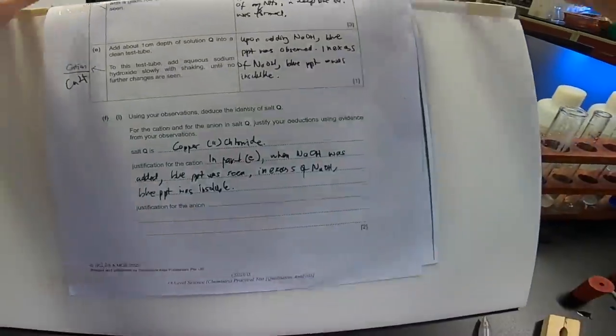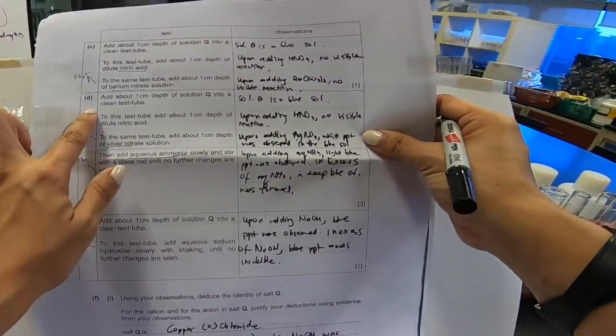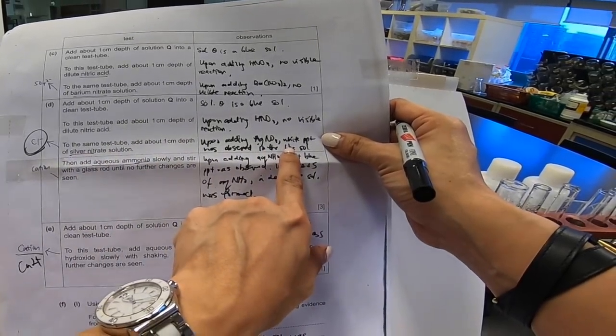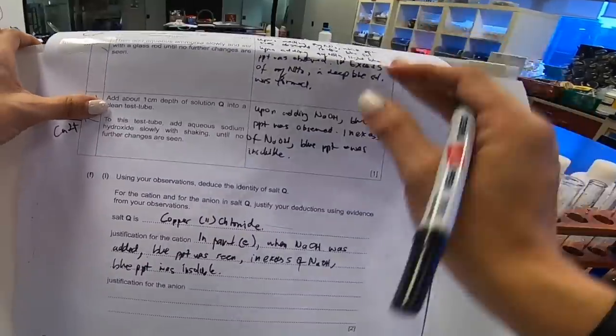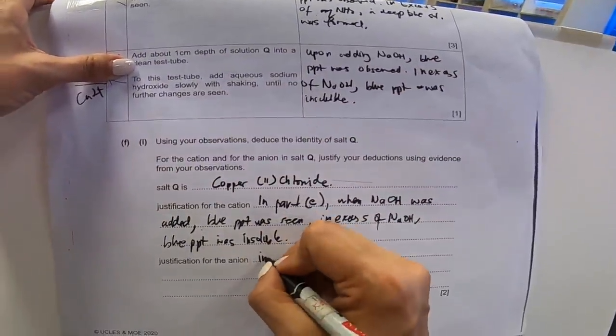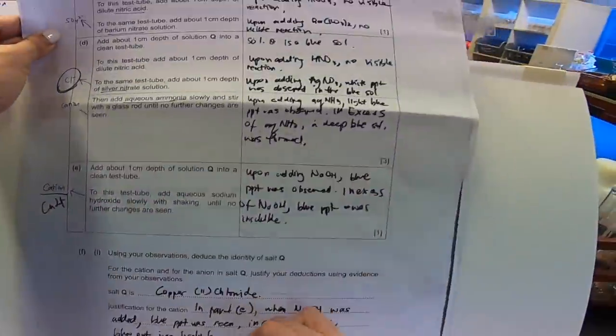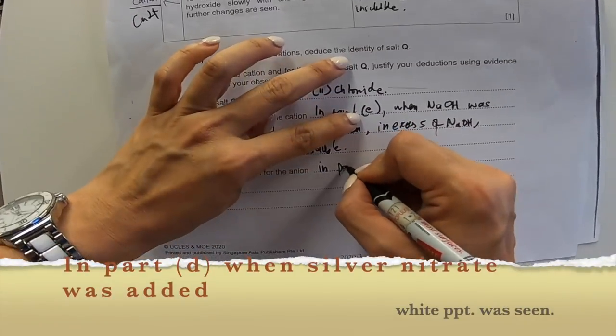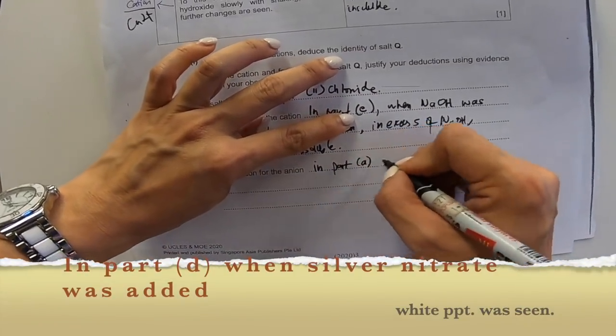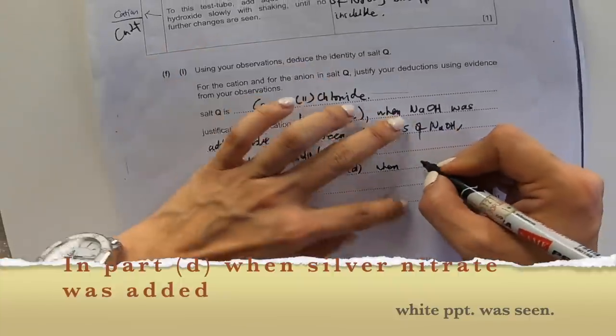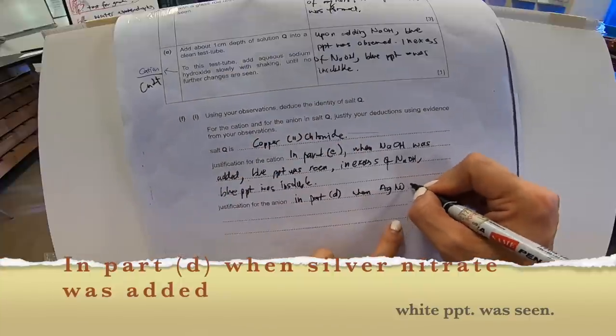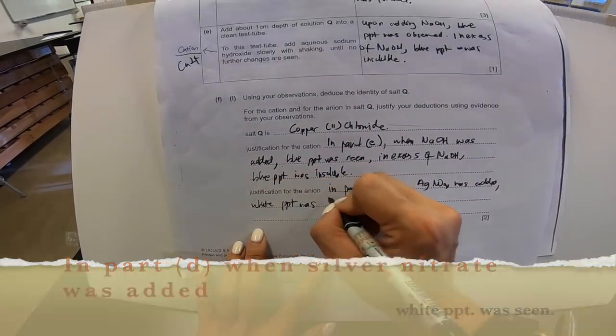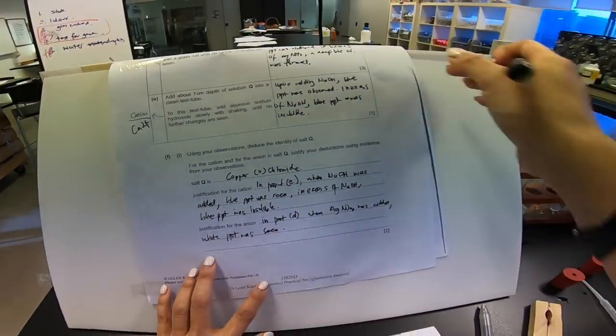Okay, justification for the anion is obvious in part D because I added silver nitrate and a white precipitate was seen. It's part D. So in part D, when AgNO3. Well, we finished this portion. Let's move on to the next part.